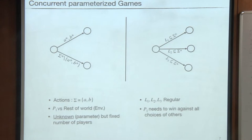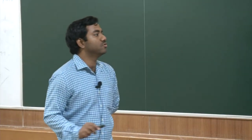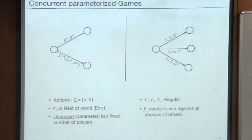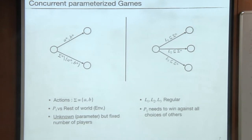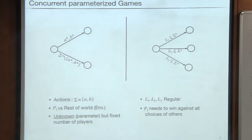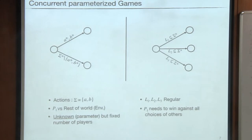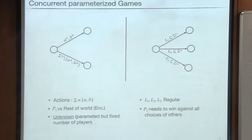Formally, the game proceeds as follows: first, the environment chooses the number of players, which is fixed throughout the game but unknown to player 1. Player 1 chooses some action A1, and the other players also choose actions, forming a word. Then the environment chooses the next vertex such that this word belongs to the corresponding language — for example, if the word belongs to L1, environment chooses V1. The environment breaks any non-determinism. The game continues and player 1 wins if he wins against every choice of others and for every number of opponents.